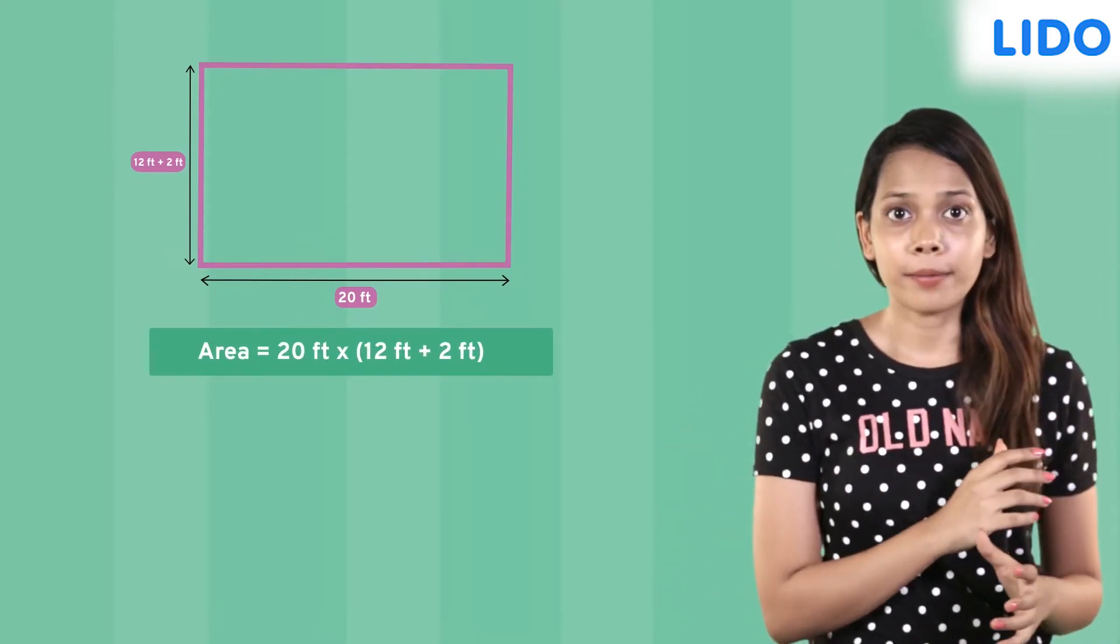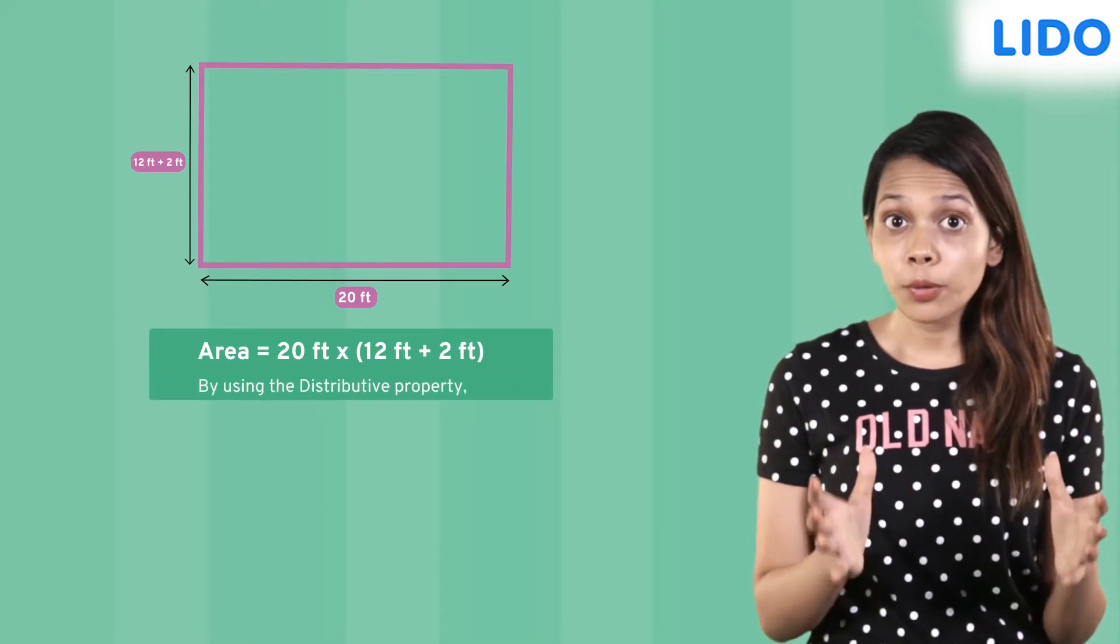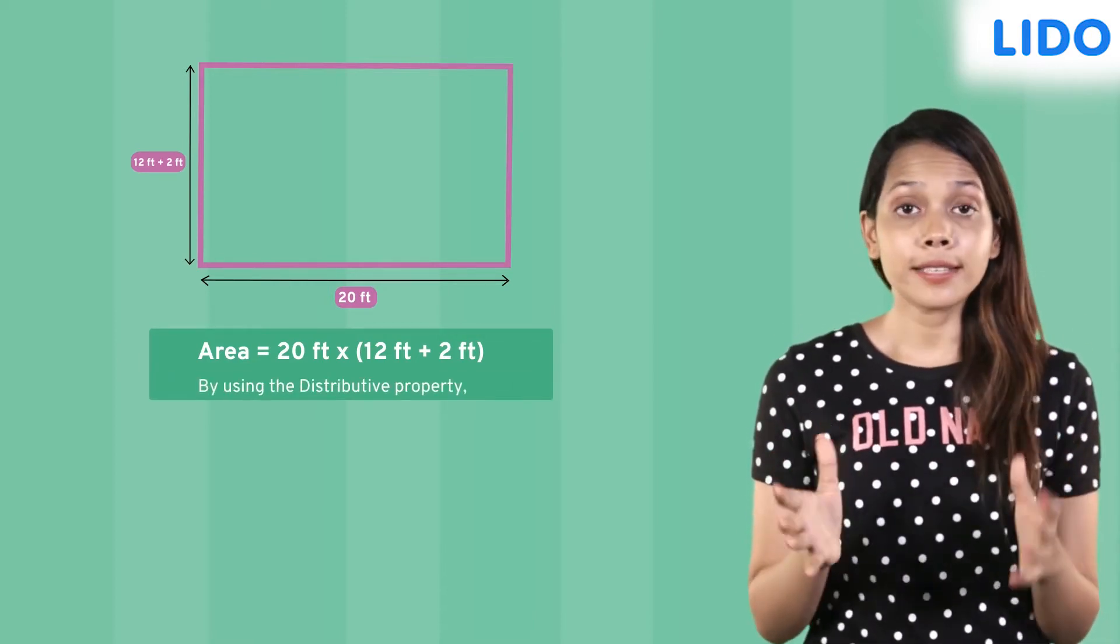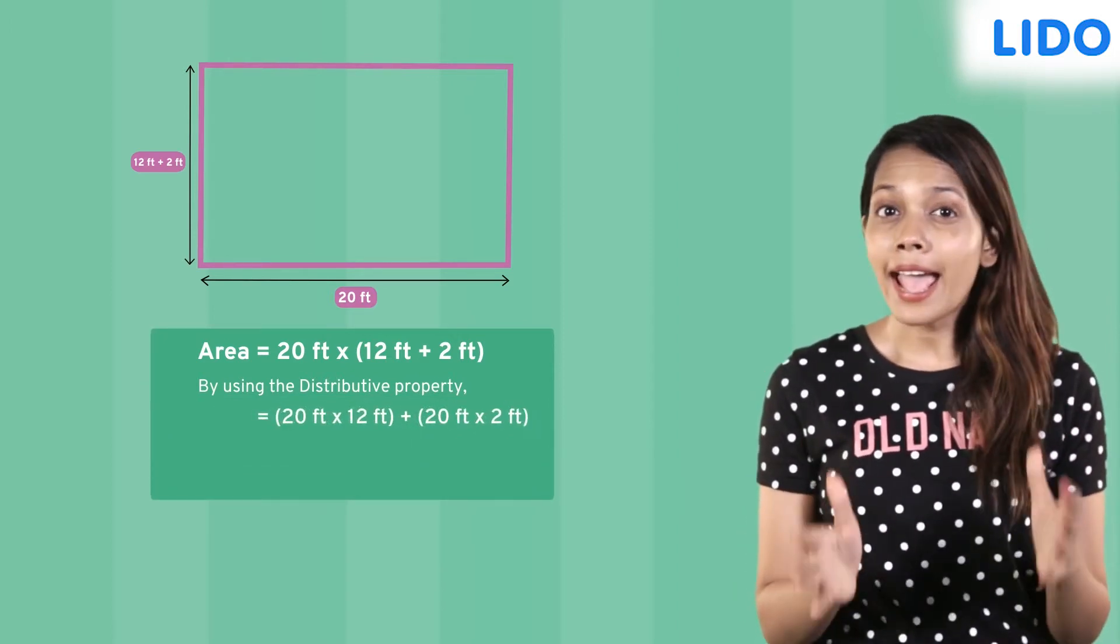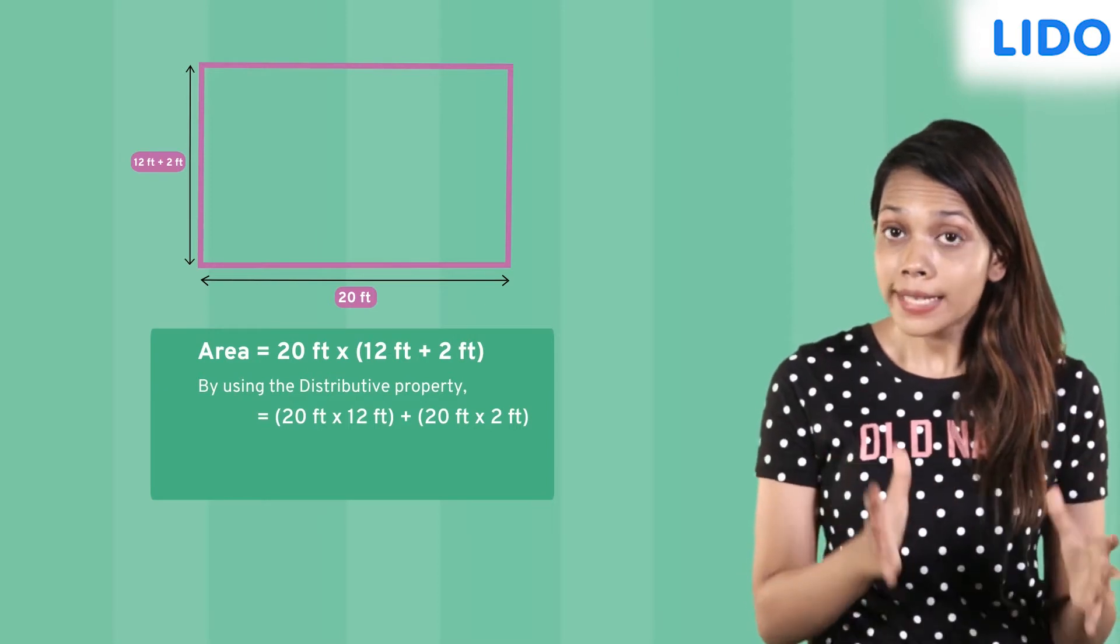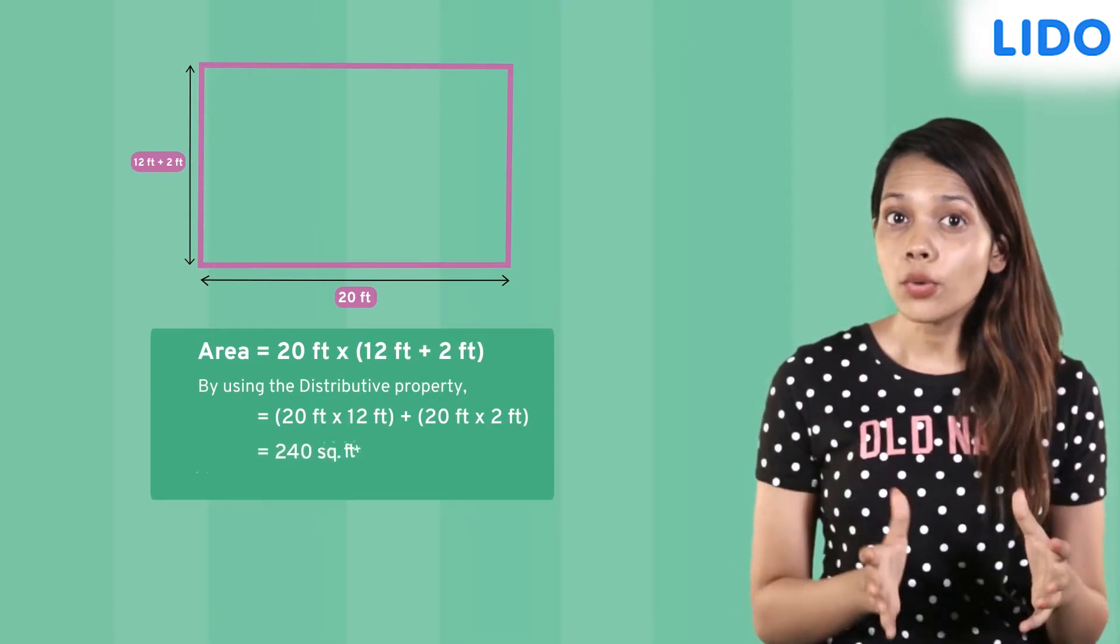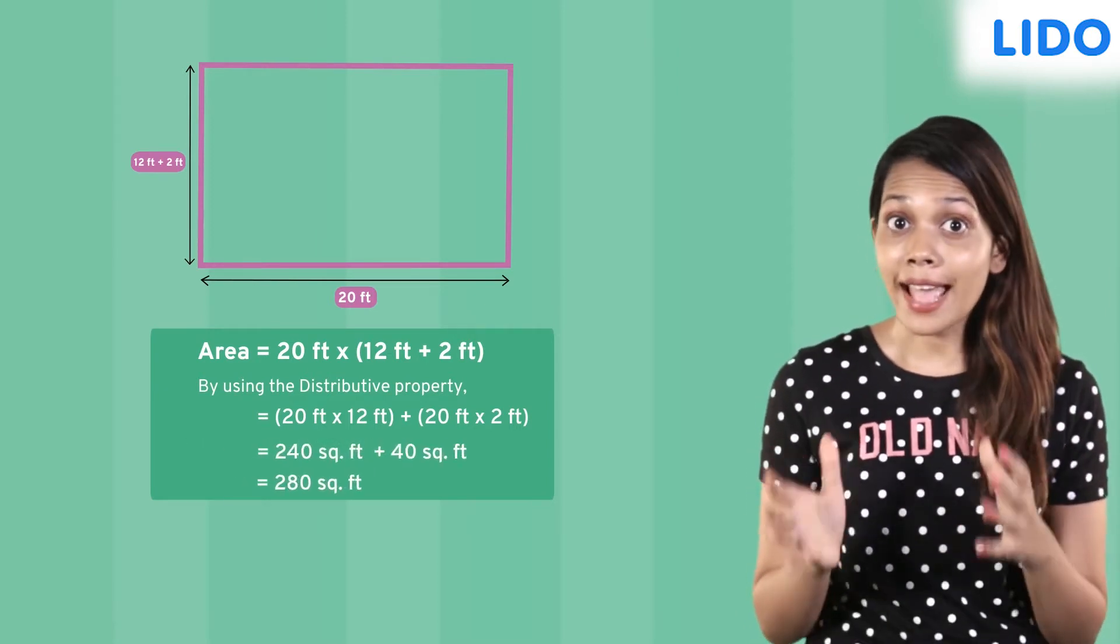How do we find this area? We can use the distributive property to simplify this multiplication wherein we multiply 20 by 12 and add this to the product of 20 by 2 to get 280 square feet as the area.